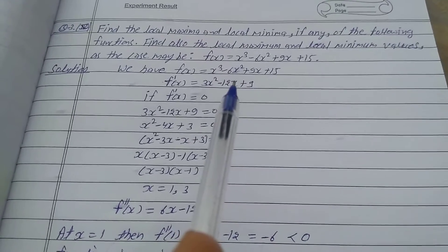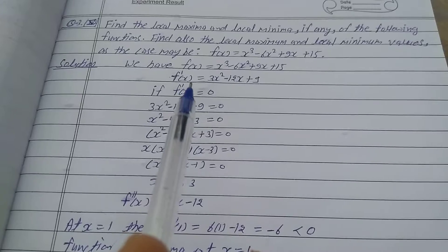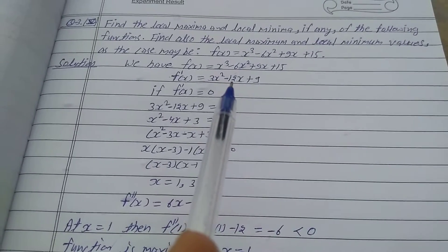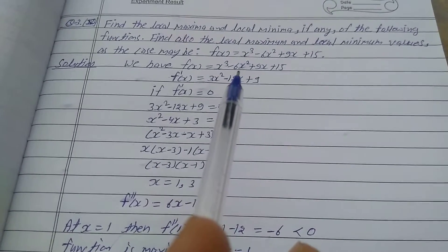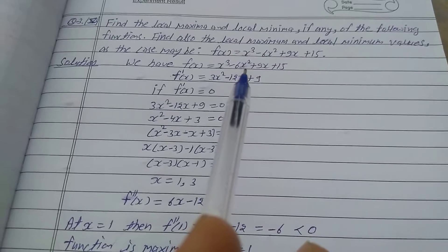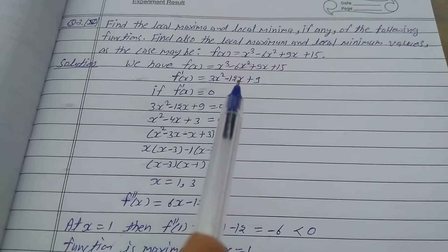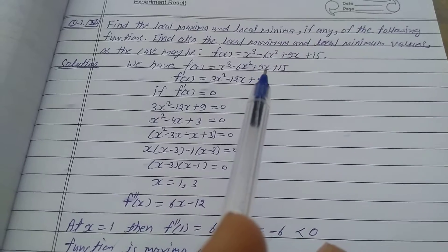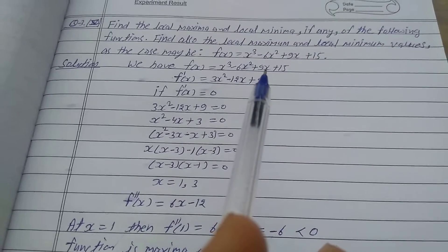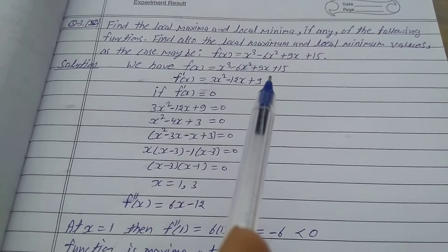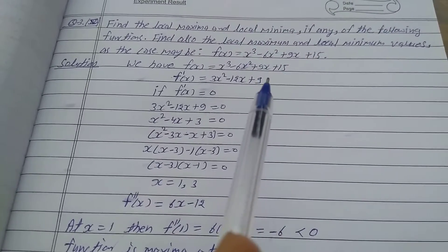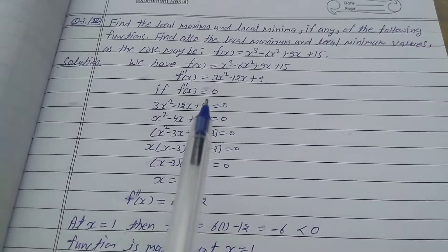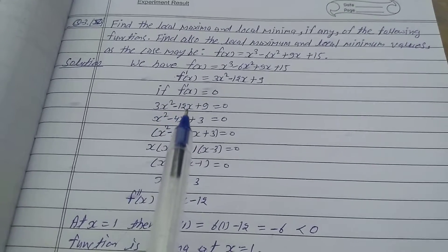For the solution, we differentiate f(x) with respect to x. f'(x): derivative of x³ is 3x², derivative of -6x² is -12x, derivative of 9x is 9, and derivative of 15 is 0. So f'(x) = 3x² - 12x + 9.